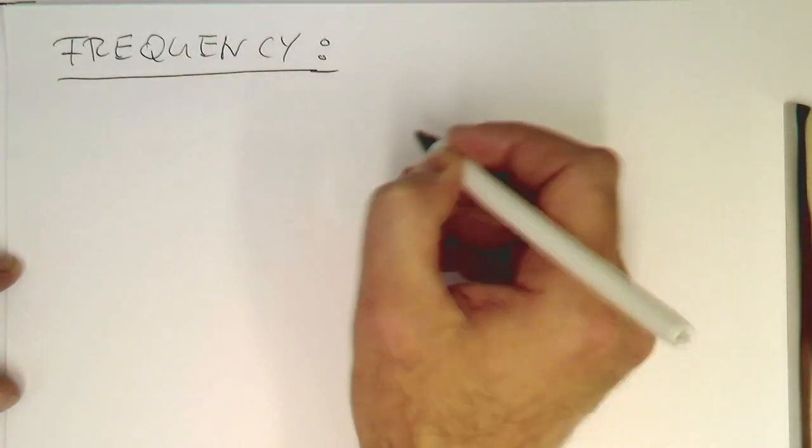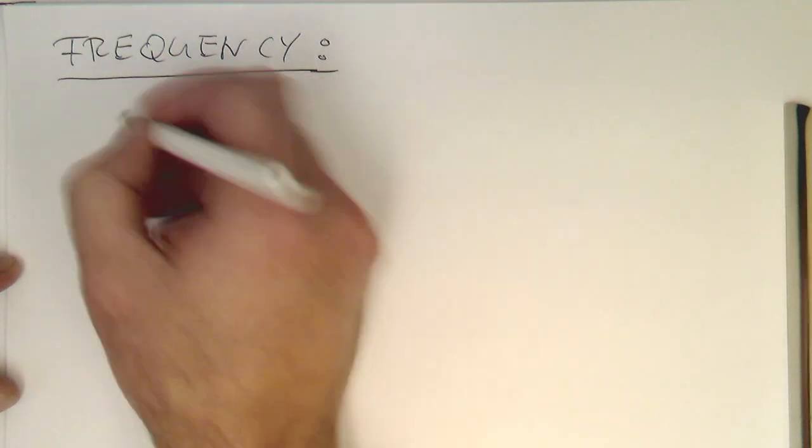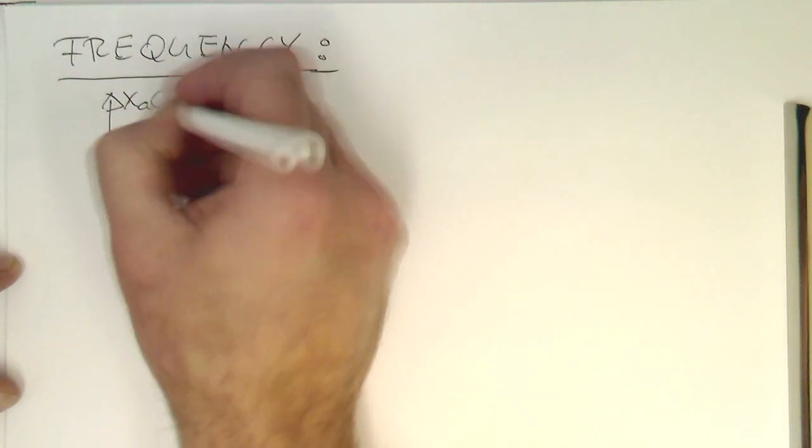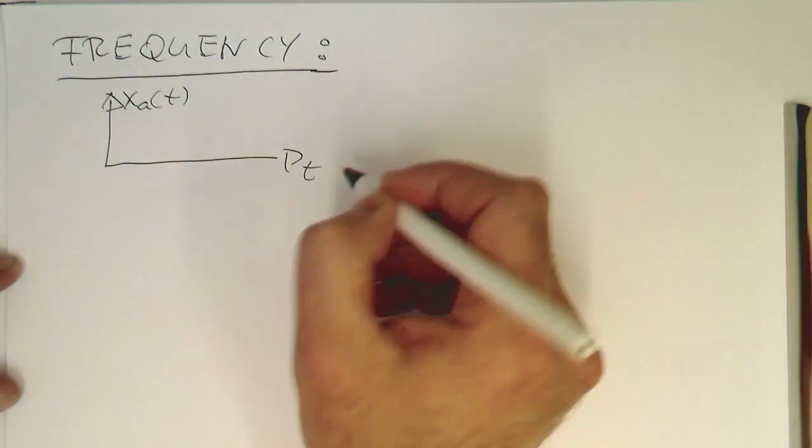So in the analog domain, that's obviously easy. So if we have a look at an analog signal here, in our convention xA of t, that's our time.